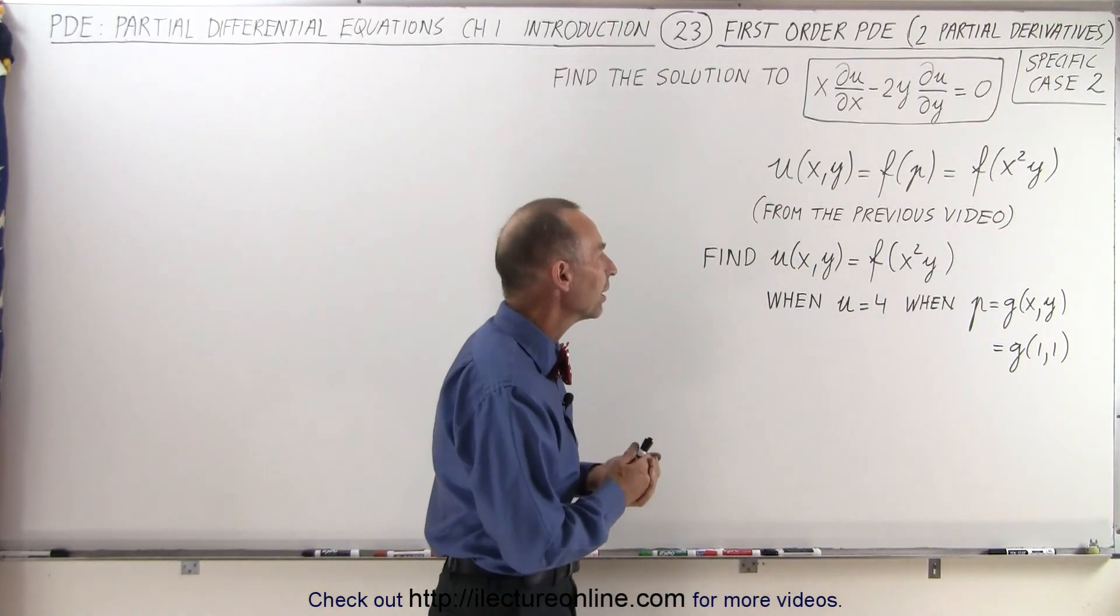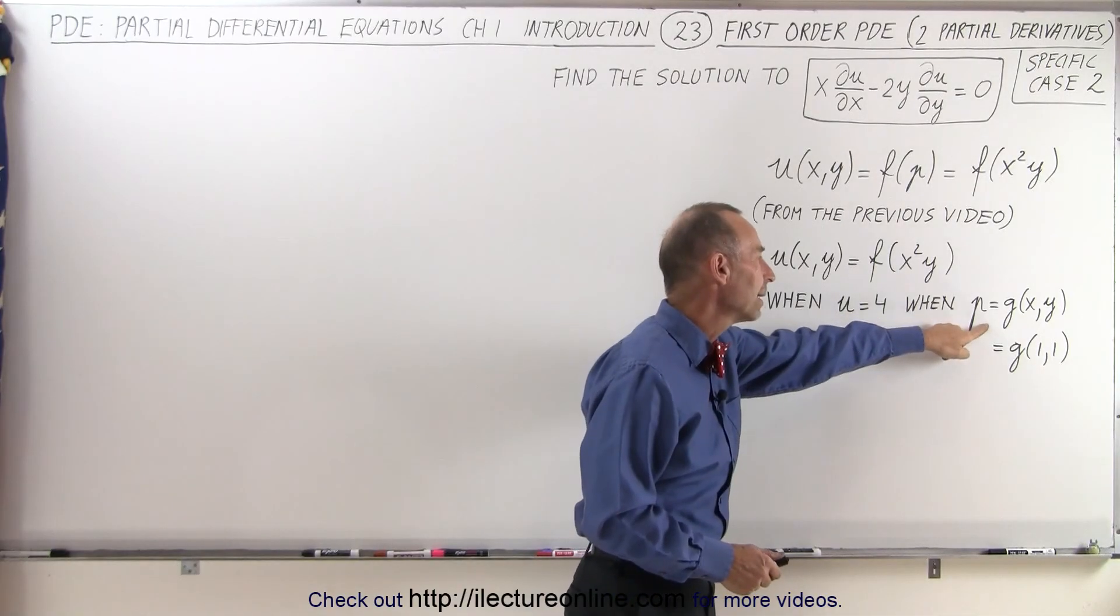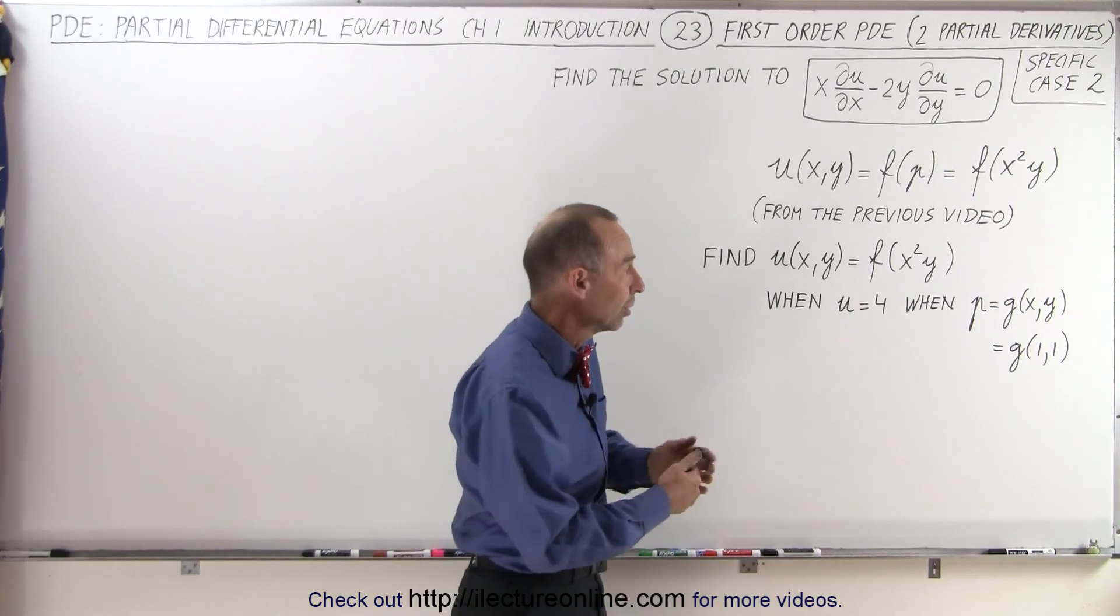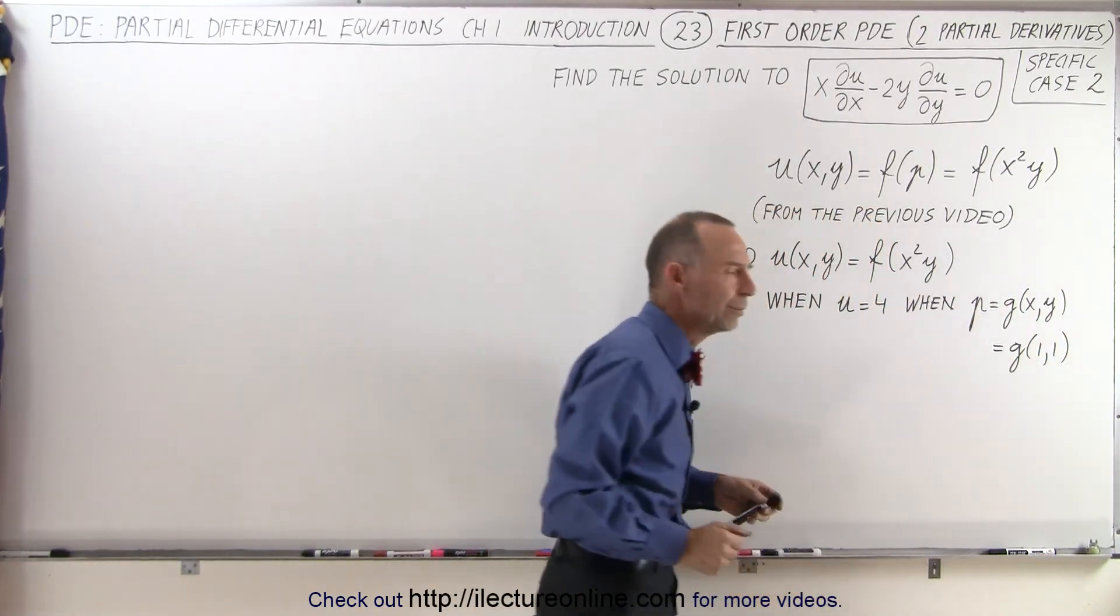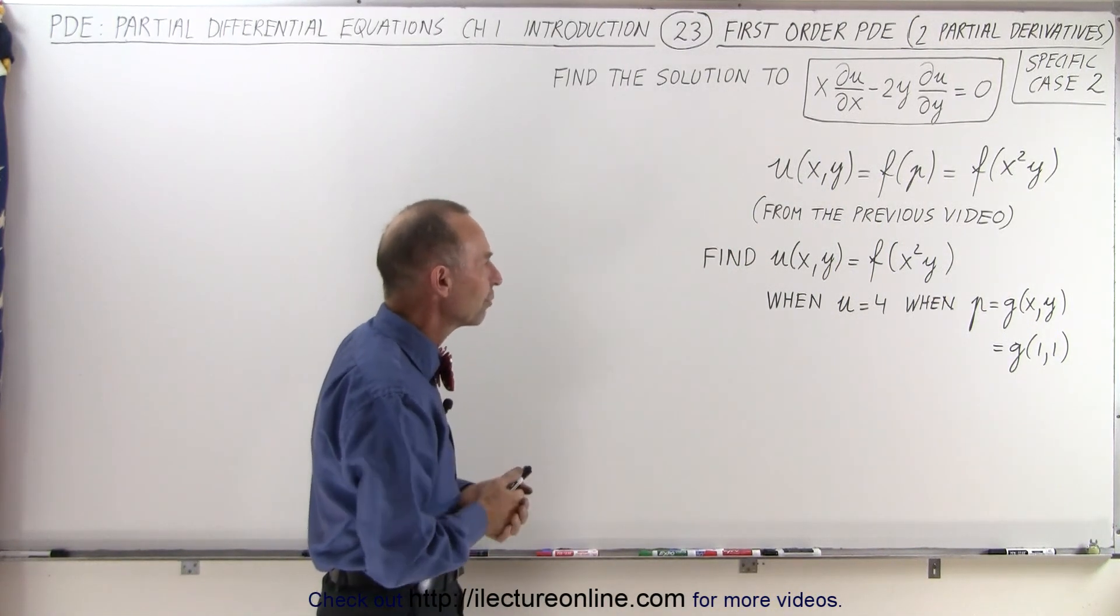But now the requirement is that u will be equal to 4 when x equals 1 and y equals 1, so p being the function of x,y where x equals 1 and y equals 1. So how do we find the proper value for u, the proper equation for u?